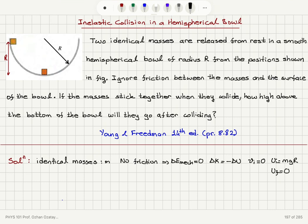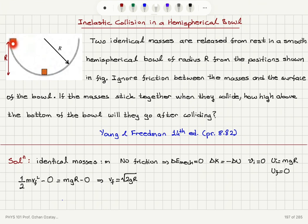So it's going to have a final kinetic energy just before it hits the next mass. We have: final kinetic energy (1/2)Mv_final² minus the initial kinetic energy equals initial potential energy MgR minus the final potential energy zero. This gives us a final speed of √(2gR) for the mass coming down just before the collision.